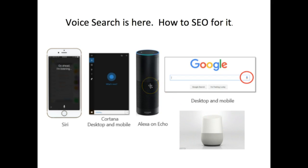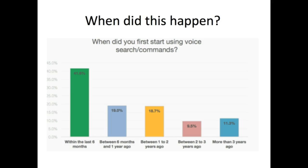Not to be outdone, Google launched Google Home, their own listening device to compete with Amazon Echo. Then Microsoft entered with Cortana — a voice search operation on desktop and mobile. Welcome to 2017! This all happened in the last 12 months, and close to 50% of people started using voice searches within the last six months.